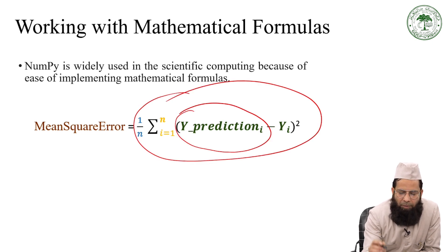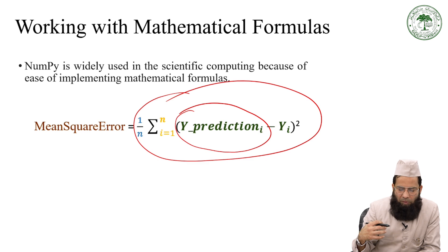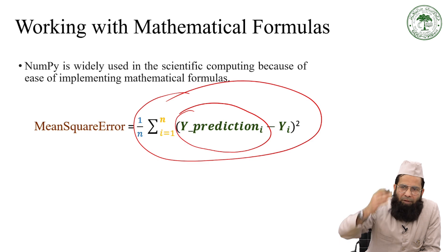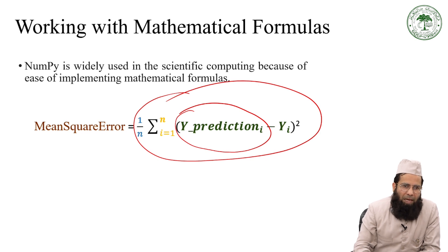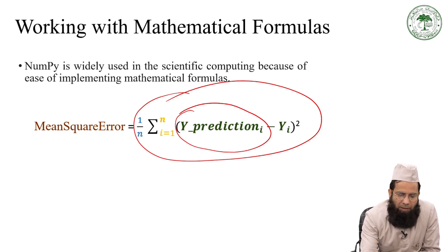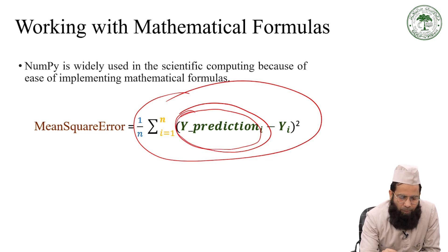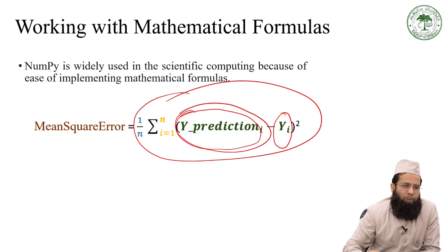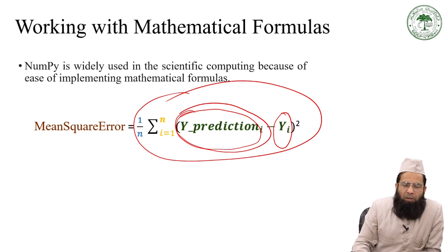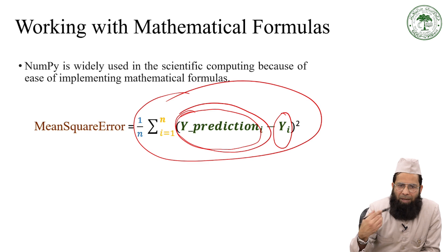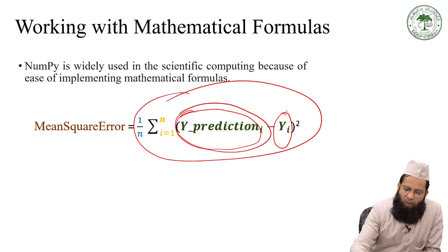So what is Y_prediction? It means the value that your model has calculated. Suppose you are having different data — several records in your dataset — and your model has calculated this value. This is the predicted value, and this is the original value, meaning the original outcome, the dependent feature in your dataset. This is the original outcome and this is the outcome that you predicted.